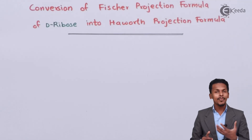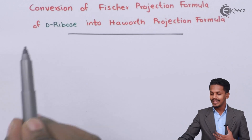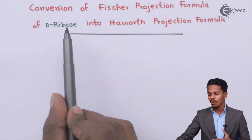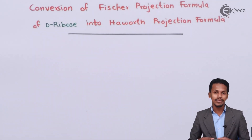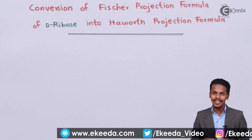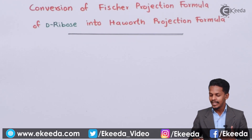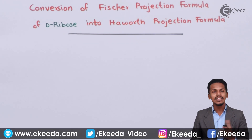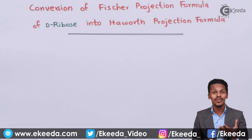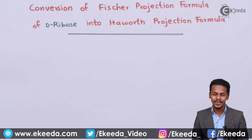Here I am going to talk about the conversion of the Fischer projection formula of D-ribose. Let us understand what is the structure of D-ribose. D-ribose consists of 5 carbon atoms and it is basically a polyhydroxy aldehyde. Obviously we could also call it an aldopentose.